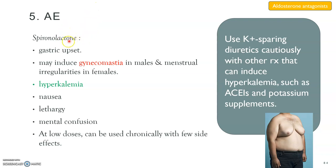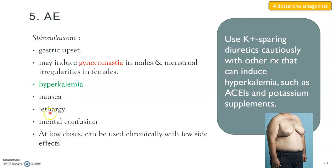The adverse effects of aldosterone antagonists — mainly for spironolactone — include gastric upset, gynecomastia in males, menstrual irregularities in females, and hyperkalemia. Therefore, potassium-sparing diuretics must be used cautiously when combined with other treatments that can cause hyperkalemia, such as ACE inhibitors like captopril and potassium supplements. They can also cause nausea, lethargy, and mental confusion. However, at low doses, spironolactone can be used chronically with few side effects — issues arise mainly at higher doses.